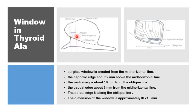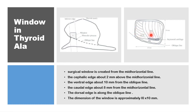For the smaller window, the cranial limit is just superior to the mid-horizontal line of the thyroid cartilage, the caudal limit is about 8 millimeters from the inferior border, and the posterior limit must not cross beyond the oblique line of the thyroid to avoid exposing the piriform sinus mucosa. The anterior limit should be about 6 millimeters from the oblique line. Removing this cartilage exposes the underlying muscles, where the transverse thyroarytenoid fibers and oblique lateral cricoarytenoid fibers are visible, and their intersection point indicates the muscular process of the arytenoid.